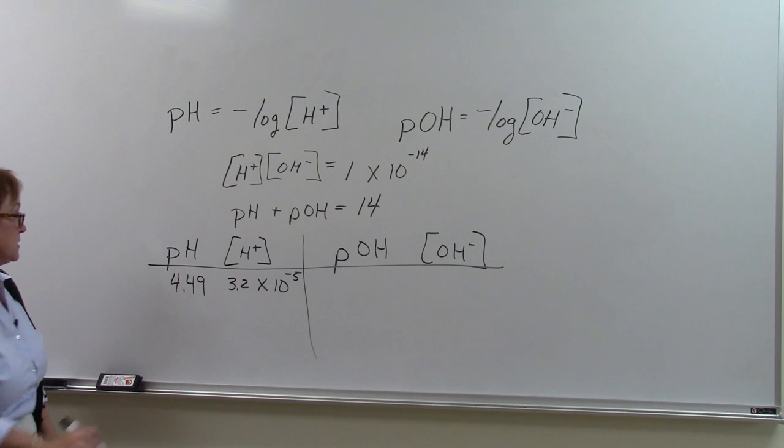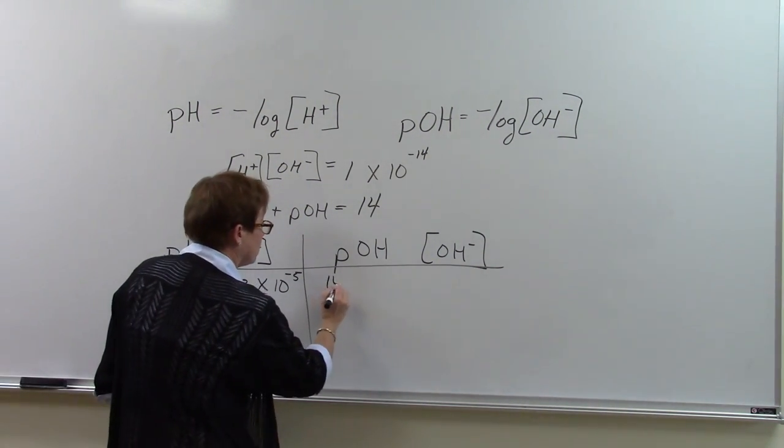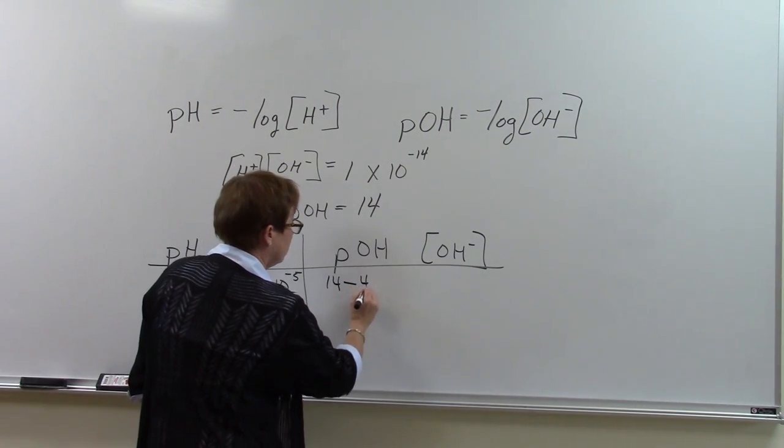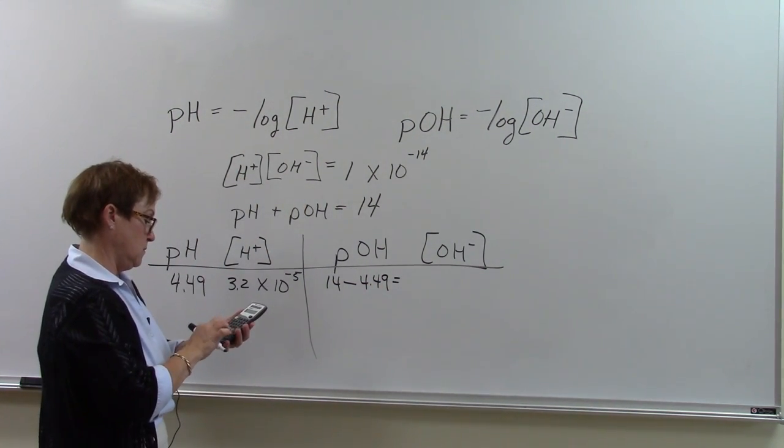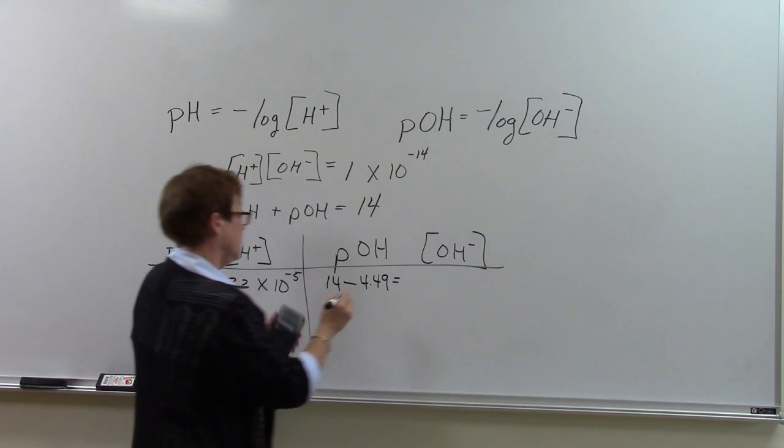Now, what does that mean the pOH is? The pOH is 14 minus 4.49, which is equal to 9.51.